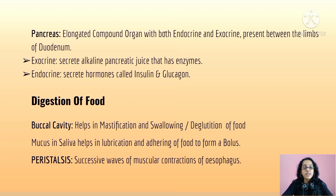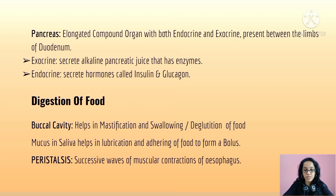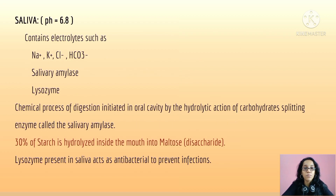Digestion of food begins in the buccal cavity, which helps in the mastication and swallowing of food, otherwise called deglutition. The mucus in saliva helps in the lubrication and adhering of food to form a bolus. Peristalsis consists of successive waves of muscular contraction of the esophagus. Saliva has a pH of 6.8, maintained with the help of electrolytes.